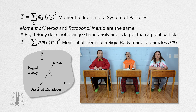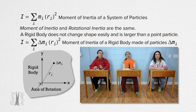So, just the same equation with a delta in front of mass sub i? Yes, but delta m sub i represents the mass of a small piece of the rigid body rather than a particle in a system of particles.